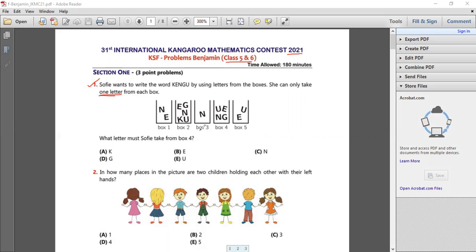Okay, so now if we see from box number three, there's only one letter. So from box number three, you can only take N. So this goes away.